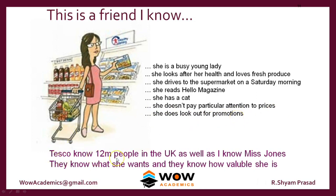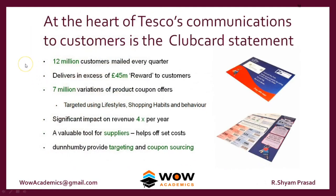Tesco knows 1.2 crore people in the UK as well as they know Miss Jones — they know what she wants and how valuable she is. They know what she buys, and they know her entire annual worth. With all this data, the company keeps mailing them. They offered 7 million variations of product offers and coupons, customizing them based on the lifestyle, shopping habits, and behavior of the people. This increased revenue by 4 times. It is a valuable tool for suppliers and helps in targeting and coupon sharing.